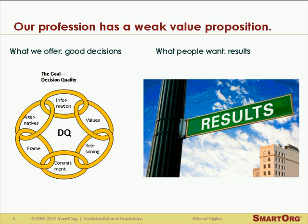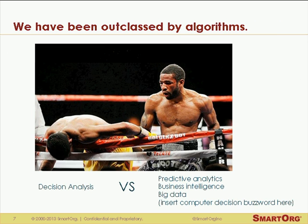Looking at what has been successful as management trends in the timeframe I've been watching, it's pretty easy to see we've been outclassed by algorithms. You can pick your favorite computer-based decision buzzword — predictive analytics, business intelligence, big data — they're all promising good decisions, better results. And they're all changing the world in a way that we're not. And we've got so much more to offer than some of these things.